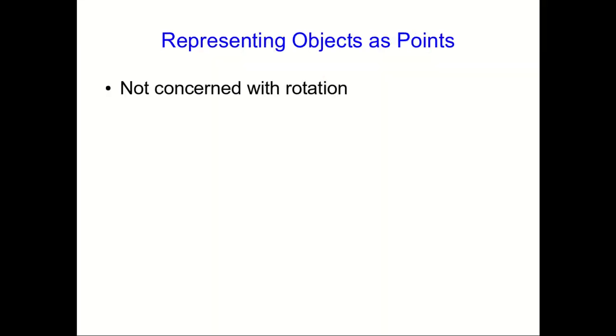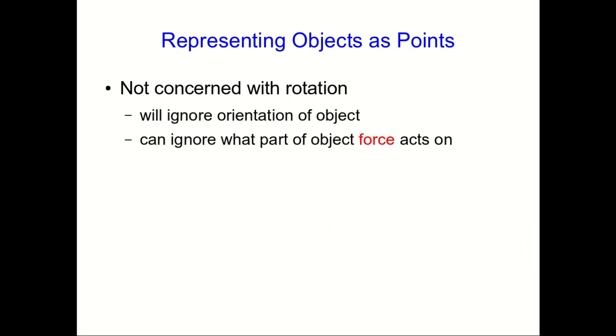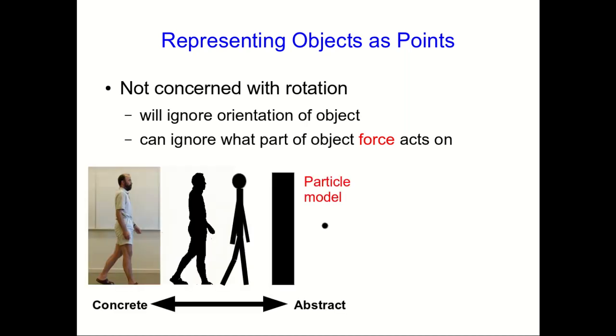Because we're not concerned with rotation, or in other words, we ignore the orientation of objects through the rest of this course, we can ignore what part of an object a force acts on. The reason is that no matter where a force acts on an object, it has the same effect on the translational motion of the object. Where it acts only affects the rotational motion. So remember this picture from the very first lecture in the course. I talked about the particle model, and this is why we're going to be able to use the particle model.